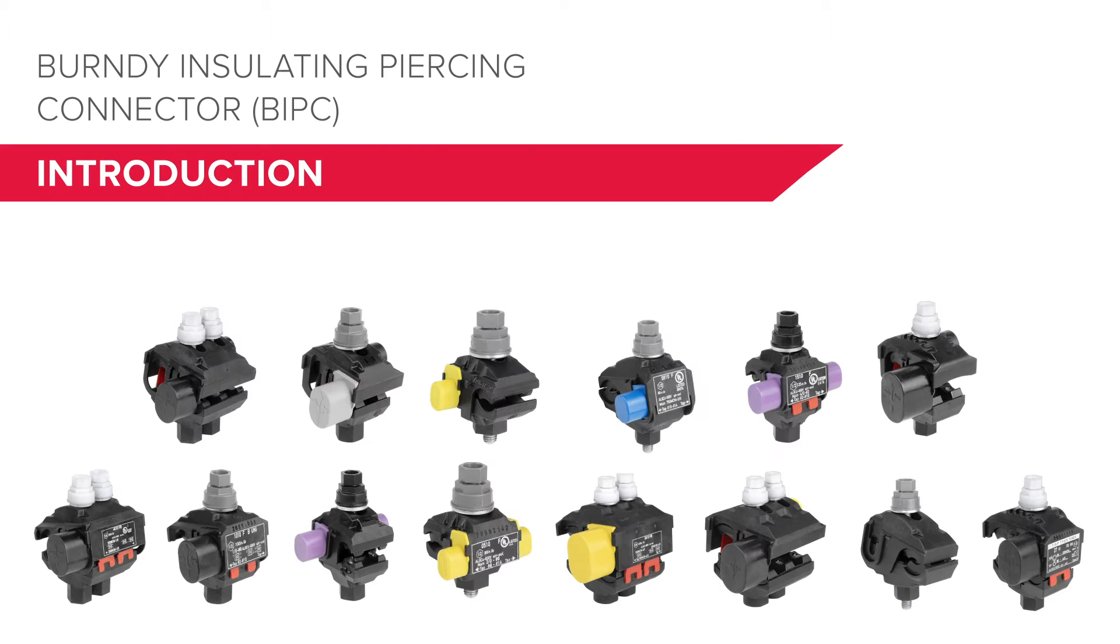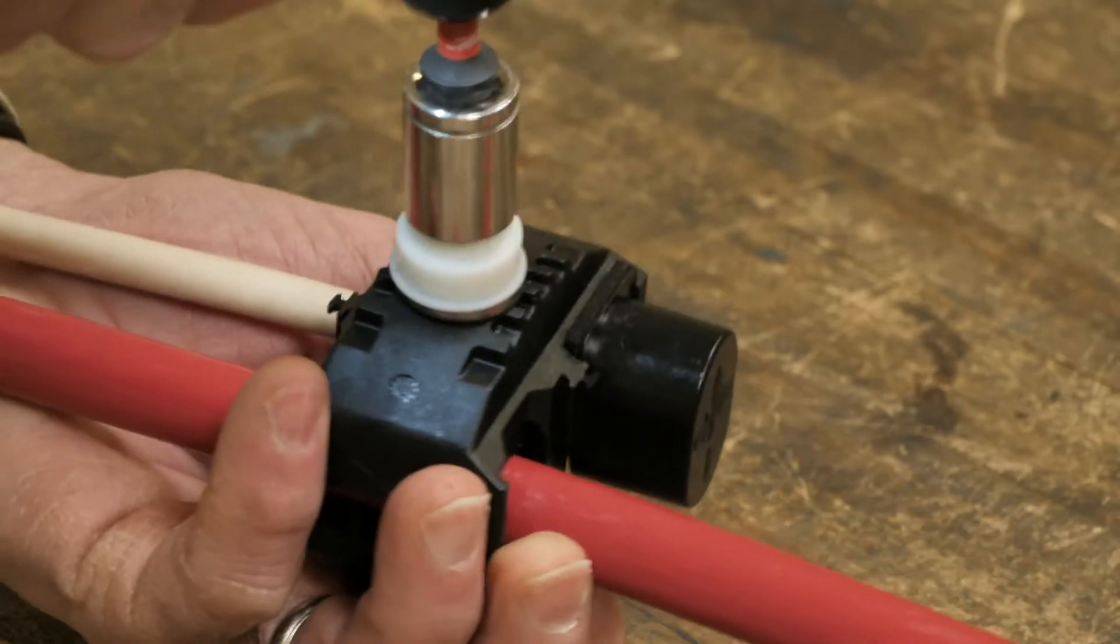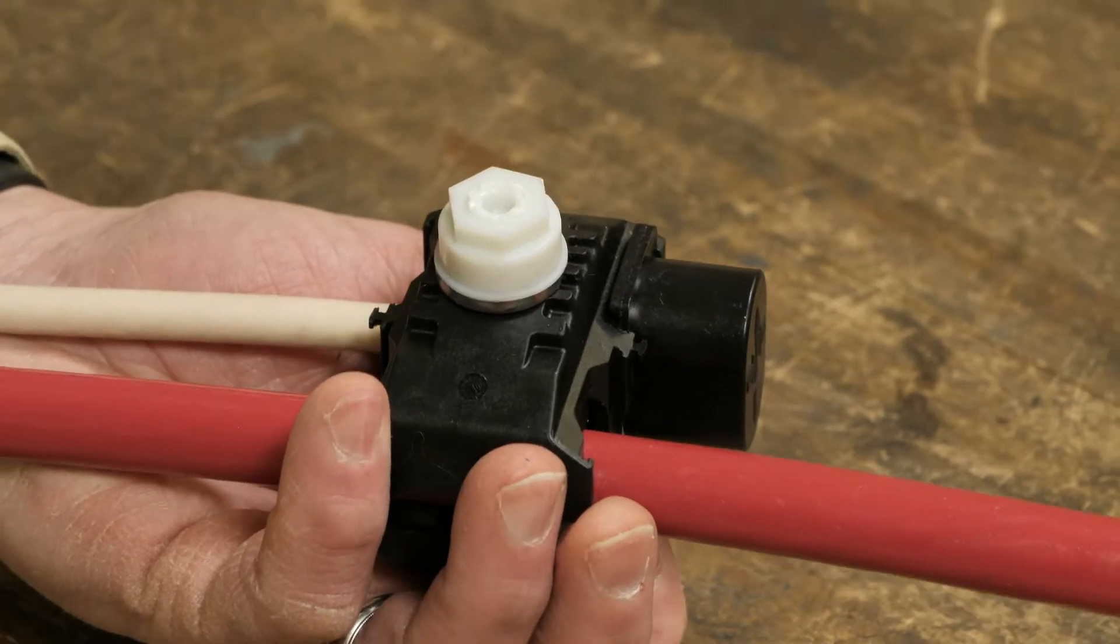The wire range has been expanded to accommodate a run from number 8 AWG to 750 kc mil and a tap from number 14 AWG to 500 kc mil. A simple wrench or impact driver with appropriately sized socket is all that is required to install these tapping and splicing connectors.